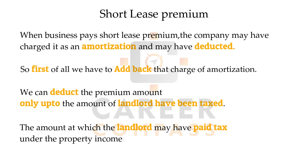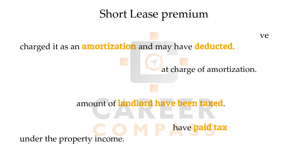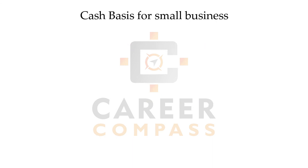The landlord receives the premium and is taxed on it under property income using the short lease premium formula. For example, if £20,000 premium is received by the landlord but only £8,000 is taxable under property income, the tenant business can only claim a deduction of £8,000 — even though they paid the full £20,000.